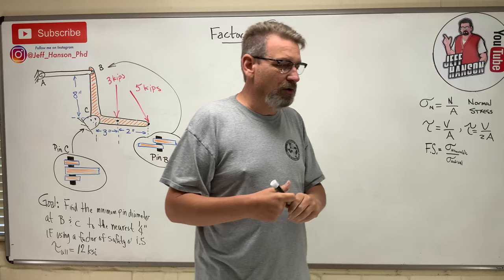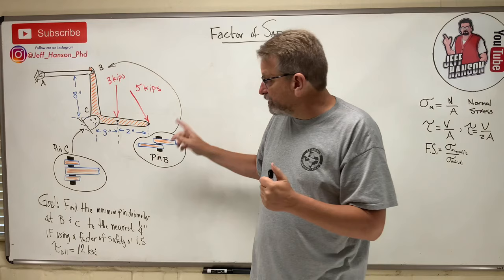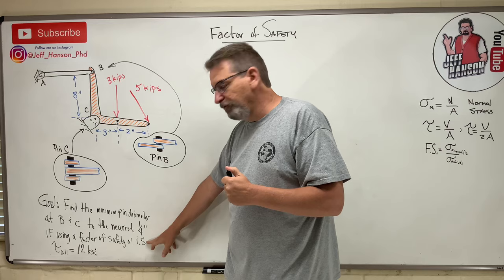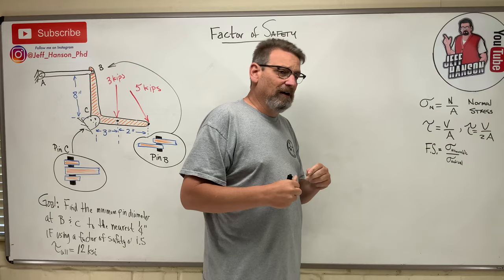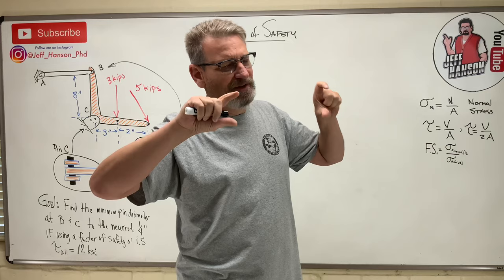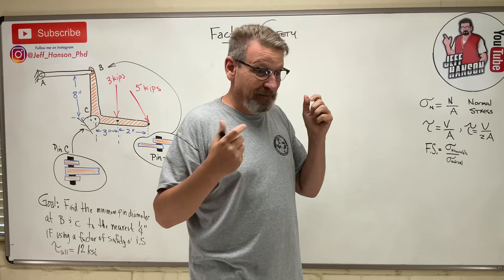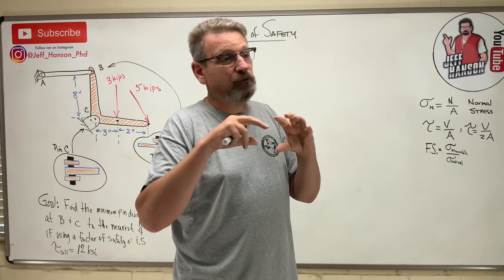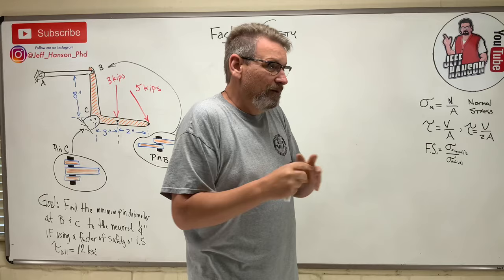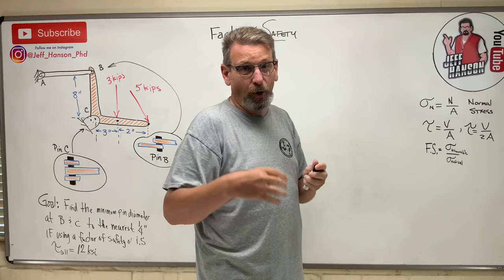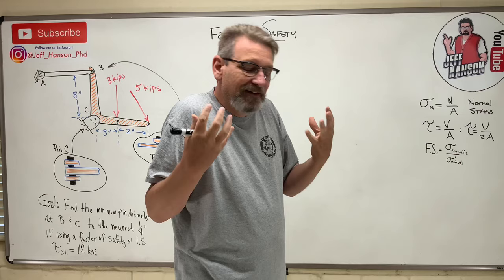A typical factor of safety they ask you to find might be 1.5. In fact, we're about to work a problem where they want a factor of safety of 1.5. The shelves at the hardware store say 'don't put more than 800 pounds on them' - that probably has a factor of safety of 1.5, meaning the shelf will really hold 1,200 pounds. The sticker says 800 pounds, but engineers know that some guy's going to accidentally overload it. Engineers like us have to account for those kinds of things so things don't get overloaded.